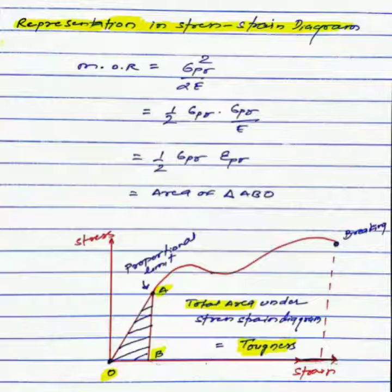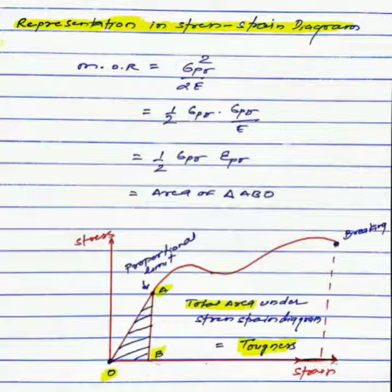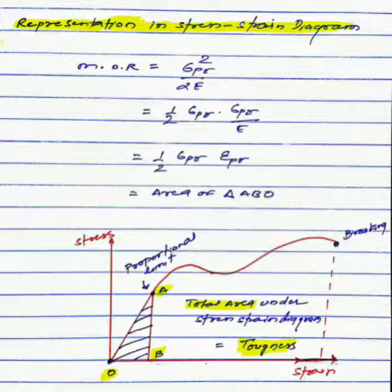times proportional limit stress divided by E, which represents proportional limit strain. So the relation will be 1/2 proportional limit stress multiplied by proportional limit strain. This quantity represents the area of triangle ABO in a stress-strain diagram.